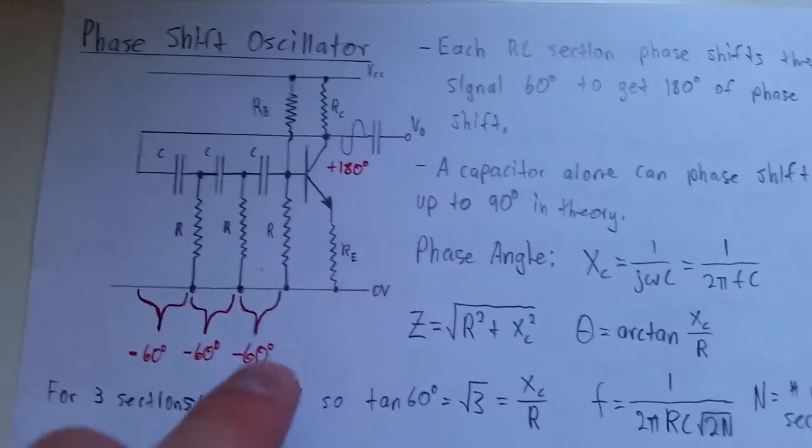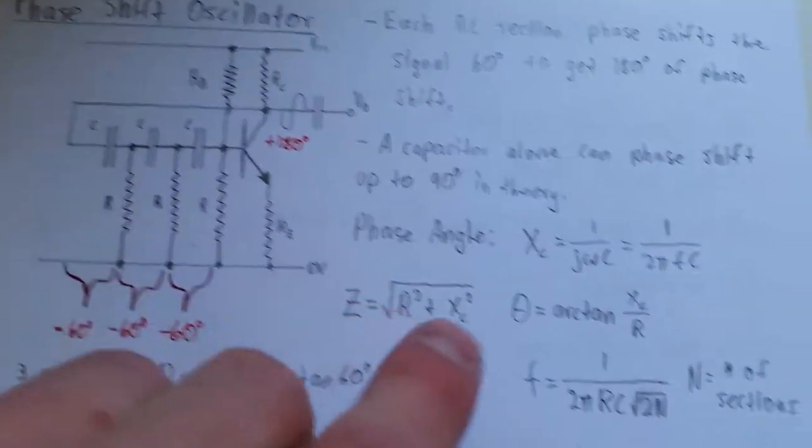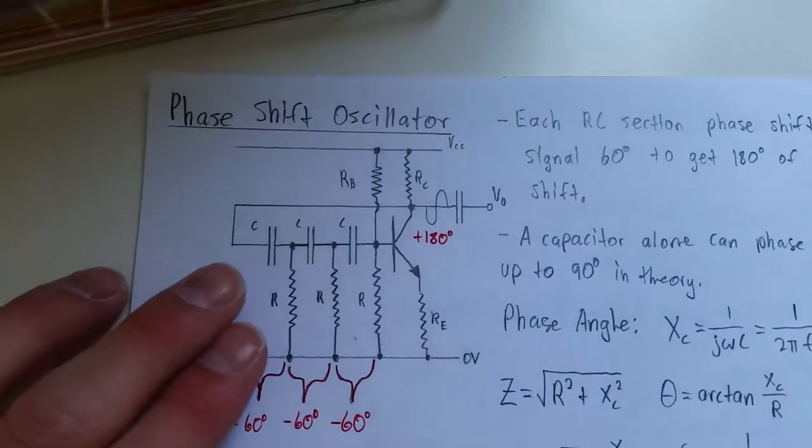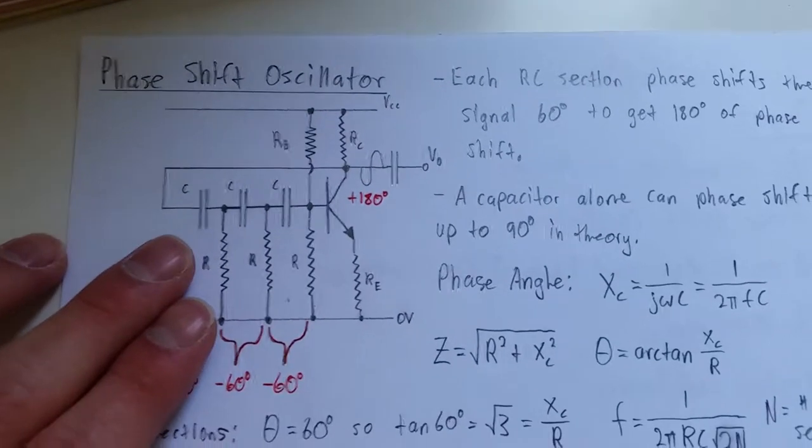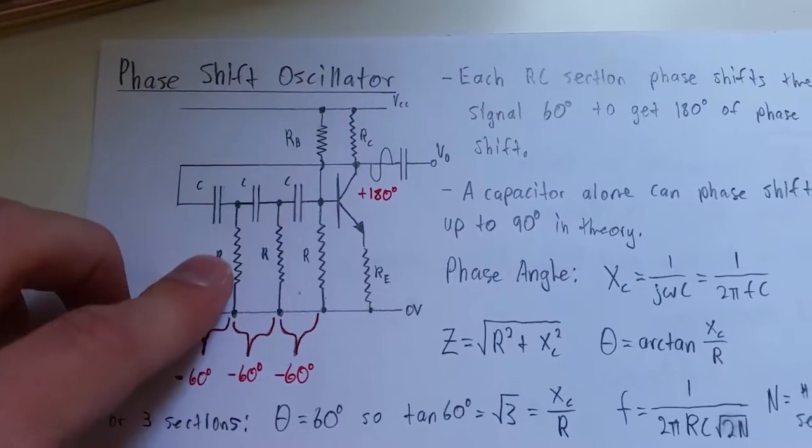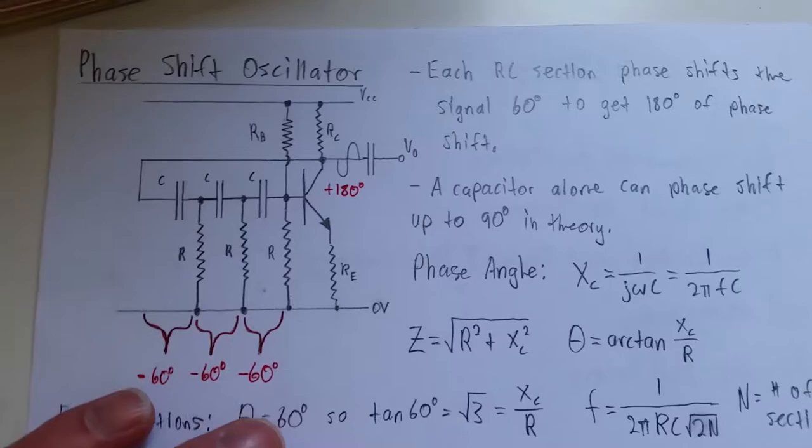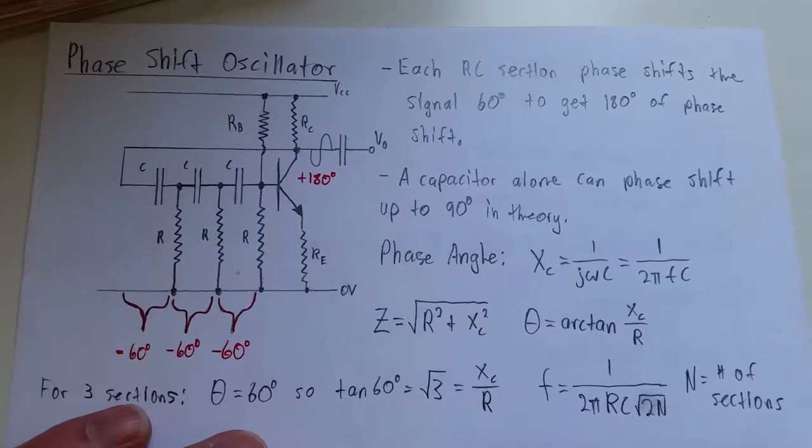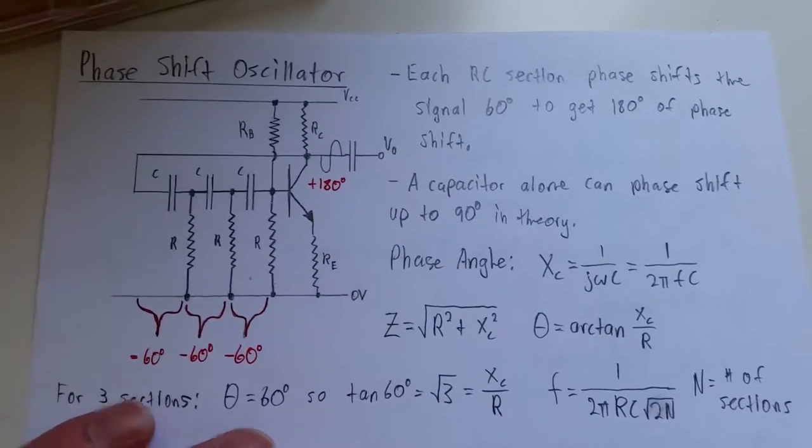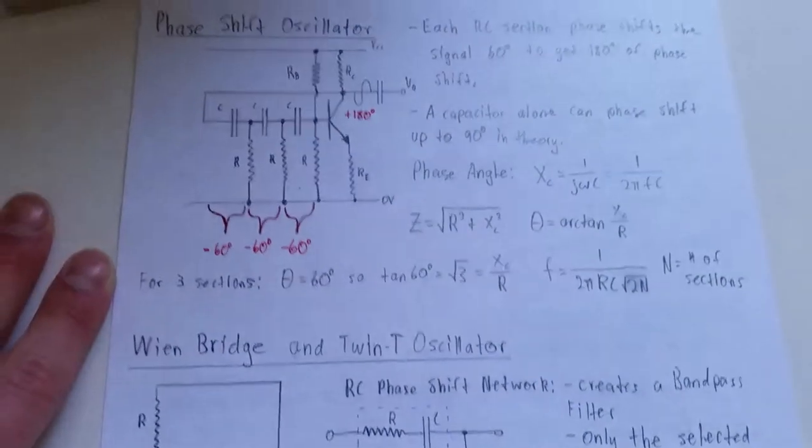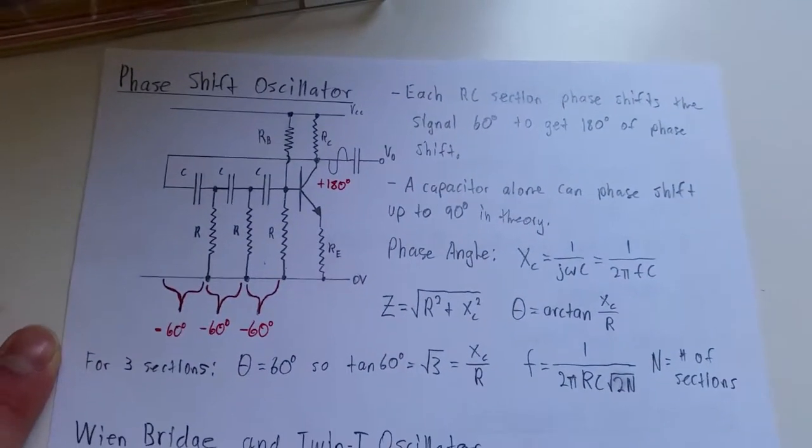Now, each of these RC networks, you find out, technically with a capacitor, it will shift up to 90 degrees. But that's with, like, infinite resistance. So, it's much easier to have three different 60 degree phase shifting networks added together, rather than just two capacitors. Because it won't give quite 180 degrees of phase shift. This doesn't work at extremely high frequencies, but it will work up to, like, moderate frequencies. Like, probably tens of kilohertz, maybe hundreds of kilohertz, depending on the transistor you're using.